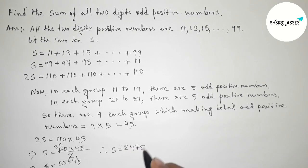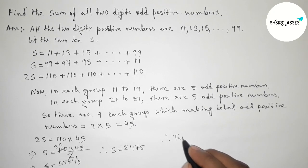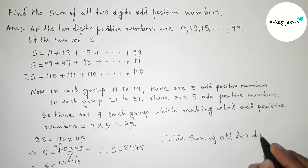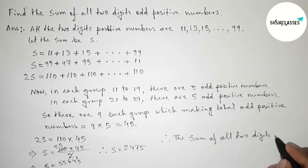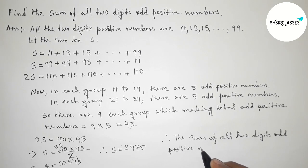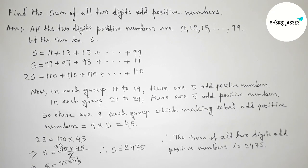Taking the multiplication, 55 times 45 equals 2475. Therefore, the sum of all two-digit odd positive numbers is 2475. That's all — thanks for watching. If this video was helpful, please share it with your friends.